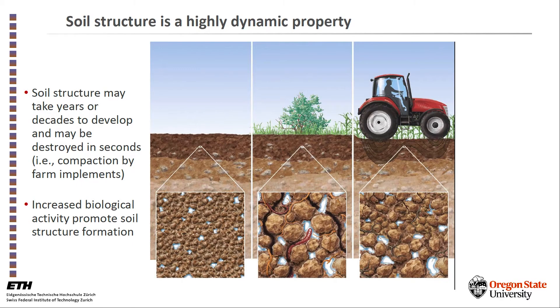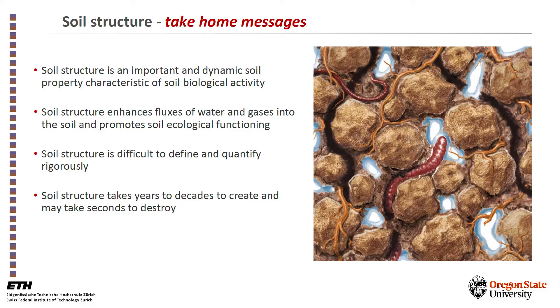Soil structure is a highly dynamic property. In the absence of biological activity, you'll see on the left panel a kind of homogeneous soil with no distinct aggregation. Whereas when you have plants, as in the middle panel, you'll see the slow formation of aggregates, and the carbon input into the soil would feed the earthworms and other fauna. That structure may be destroyed in a second with the passage of a tractor over the surface. The take-home message is that soil structure is an important and dynamic soil property.